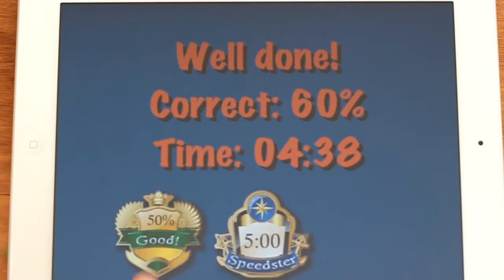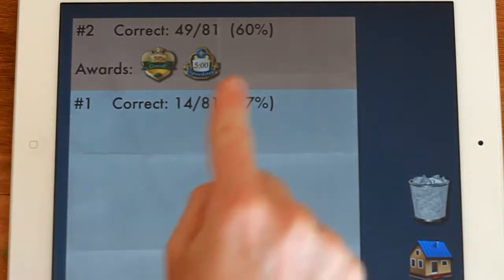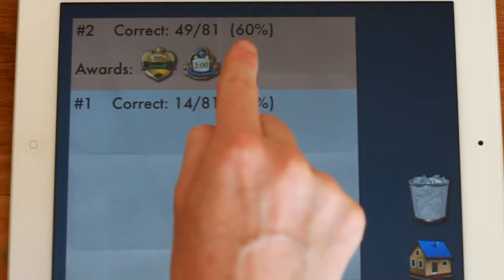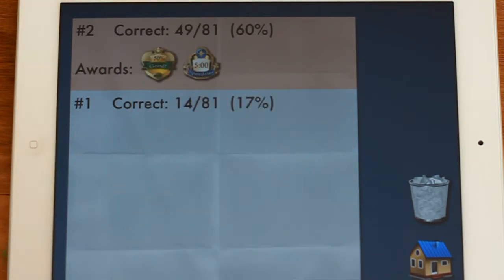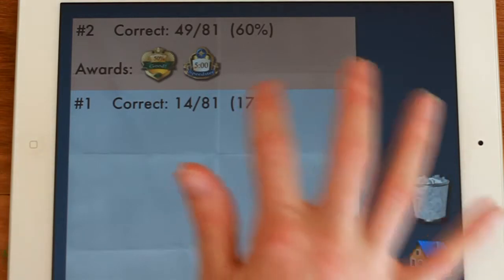Okay, so we've got two certificates there. We can view them again. Okay, so we've got that time there. We did 60% correct, 49 out of 81, about 50% good and under 5 minutes for Speedster. Now you can trash those and obviously start again on this lovely piece of paper.